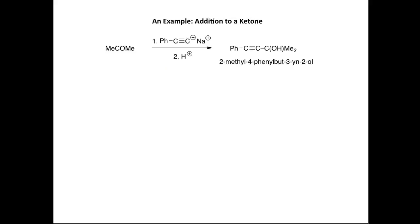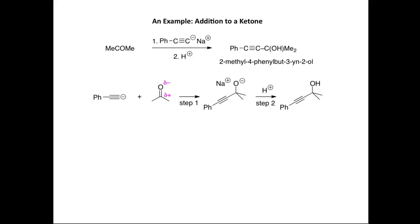In the final example, we look at nucleophilic addition to a ketone — in this case acetone or propanone — to form a particular alcohol. This is a two-step process: the first involves reaction of an alkynide anion, and the second involves reaction with a proton. We draw the skeletal structures, showing propanone with delta plus on the carbonyl carbon and delta minus on the oxygen, along with the product from step one and the final product from step two.